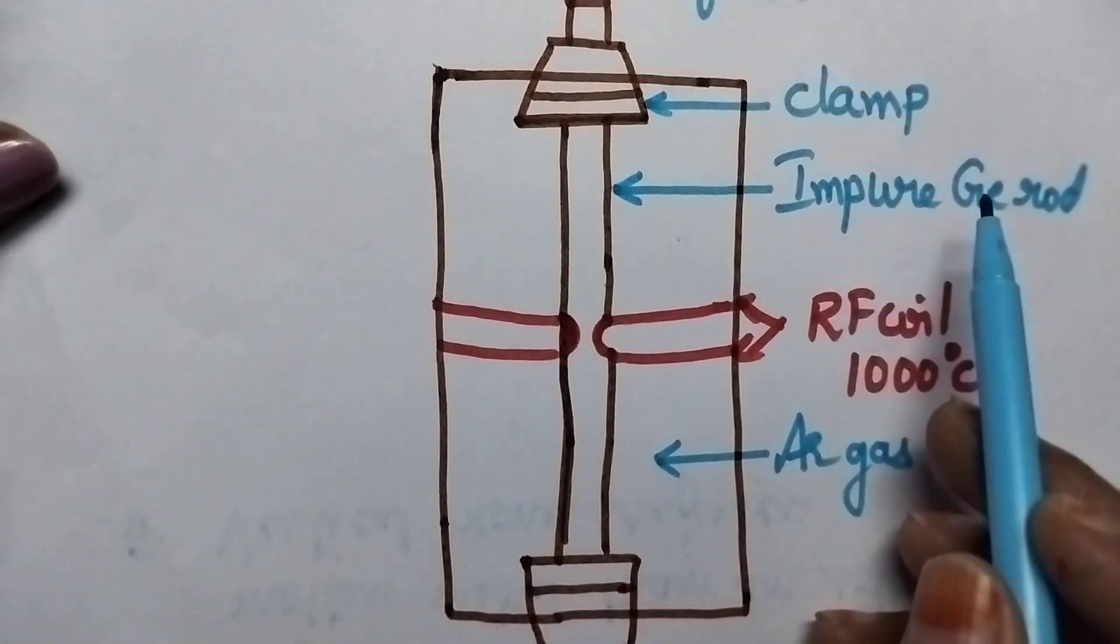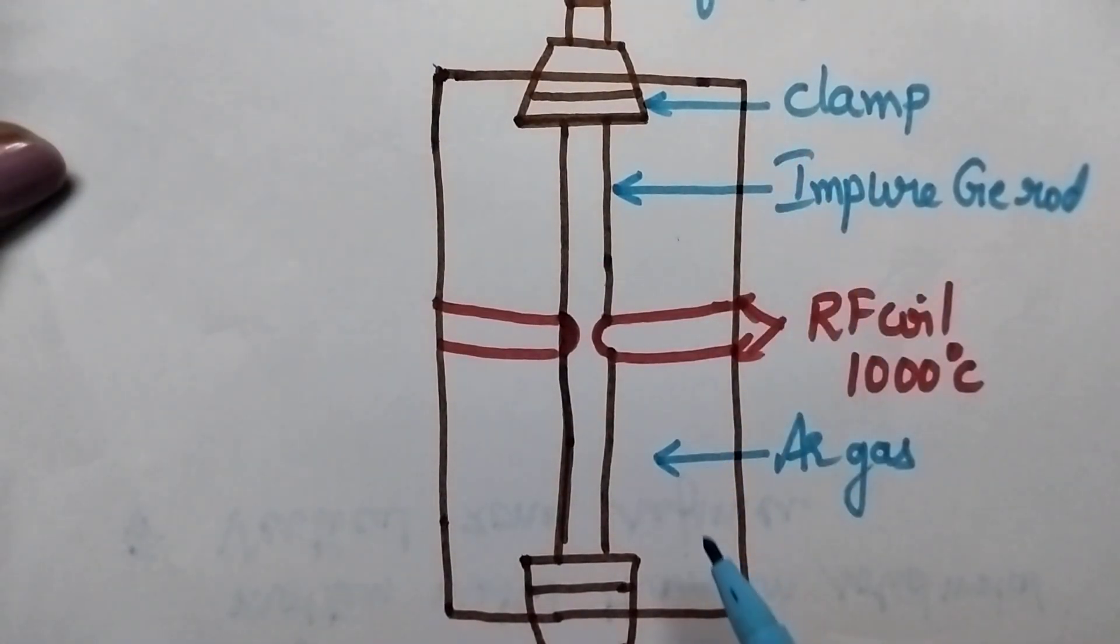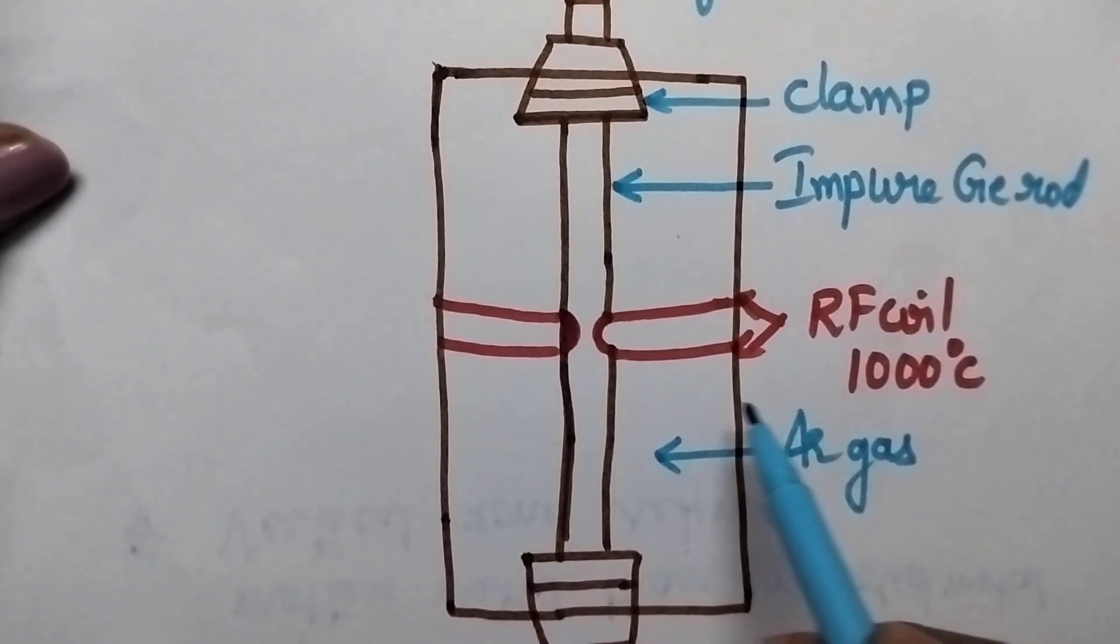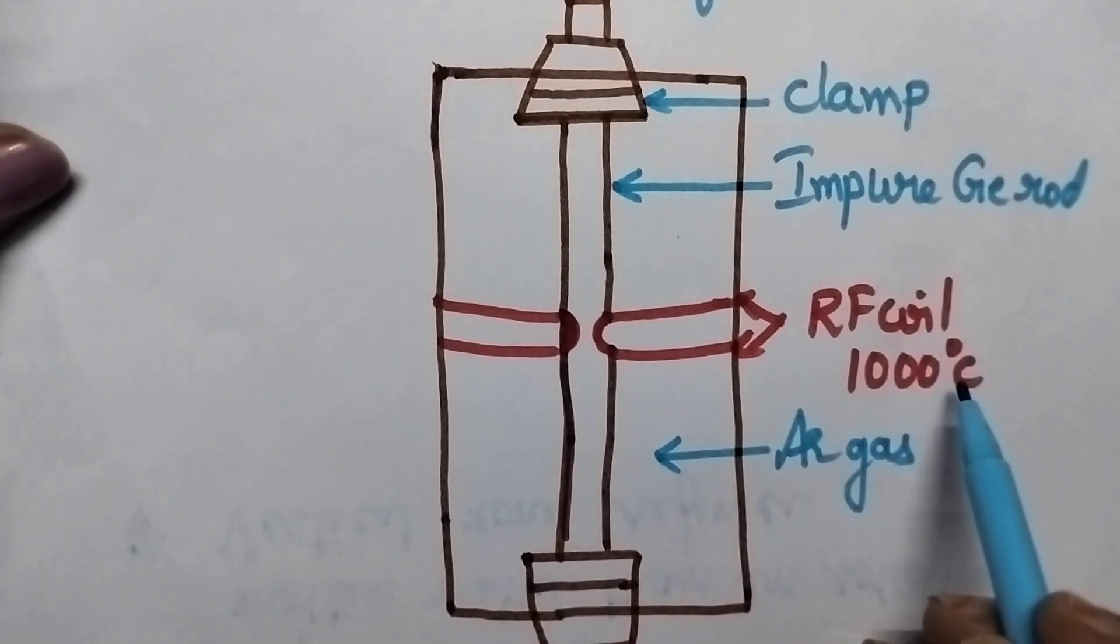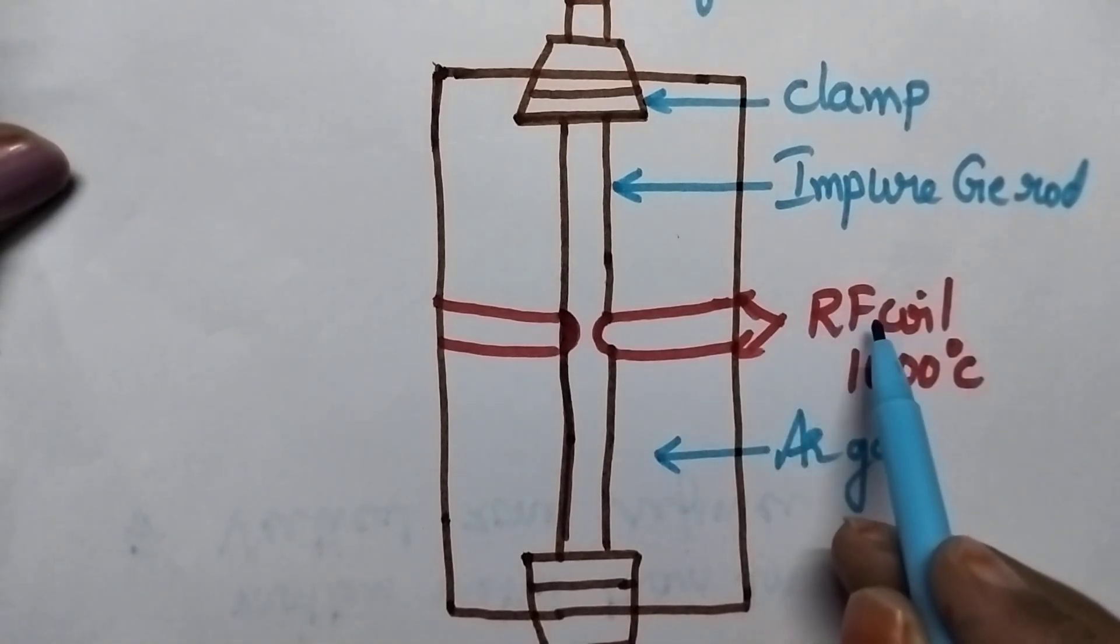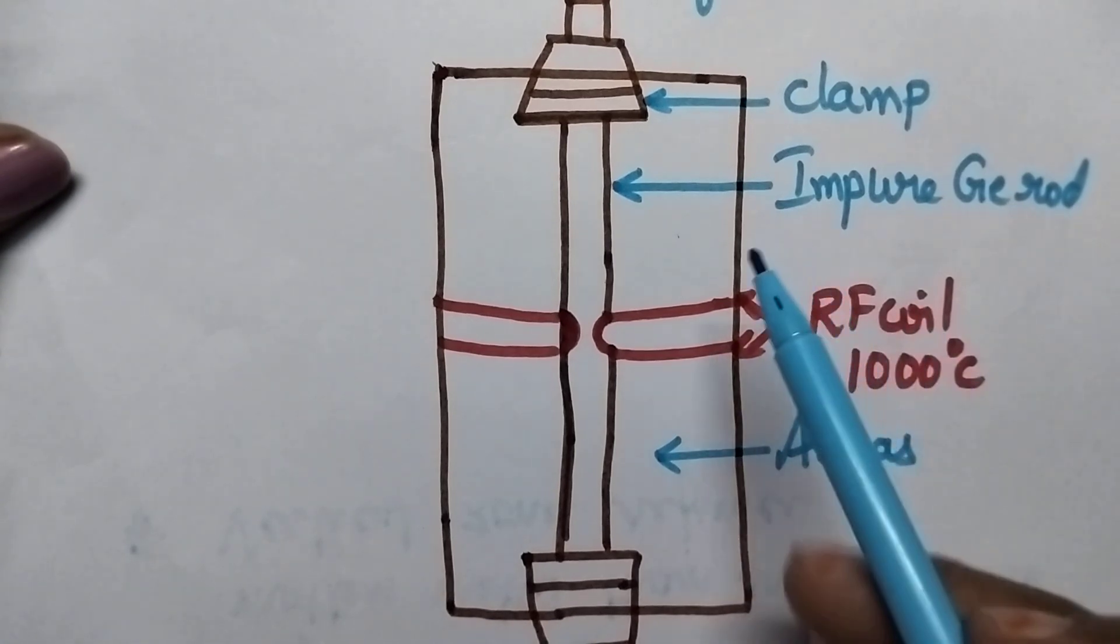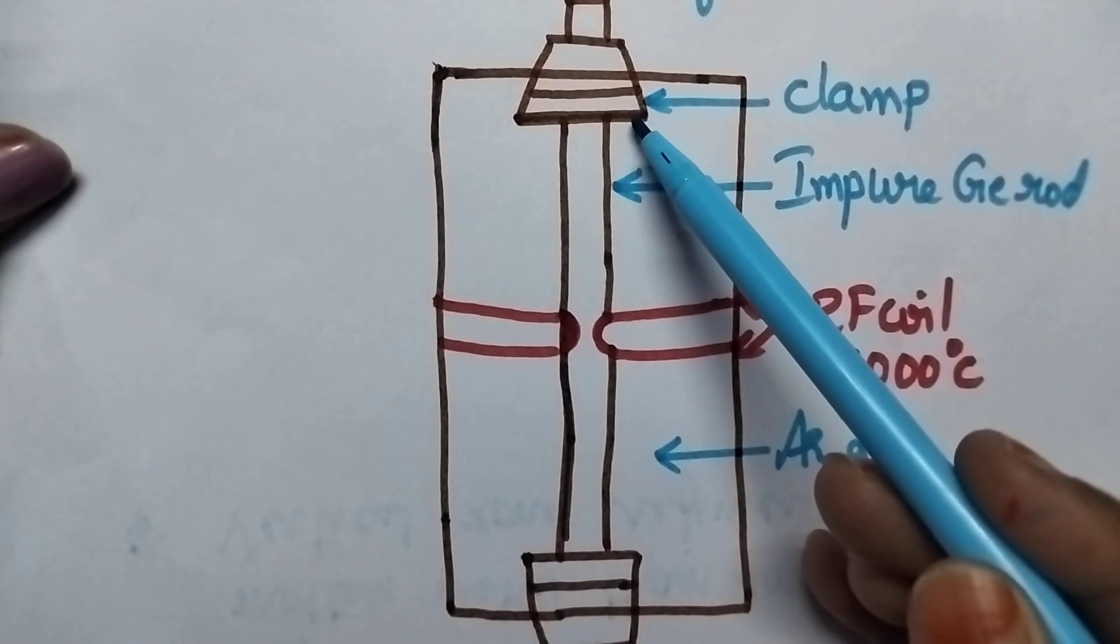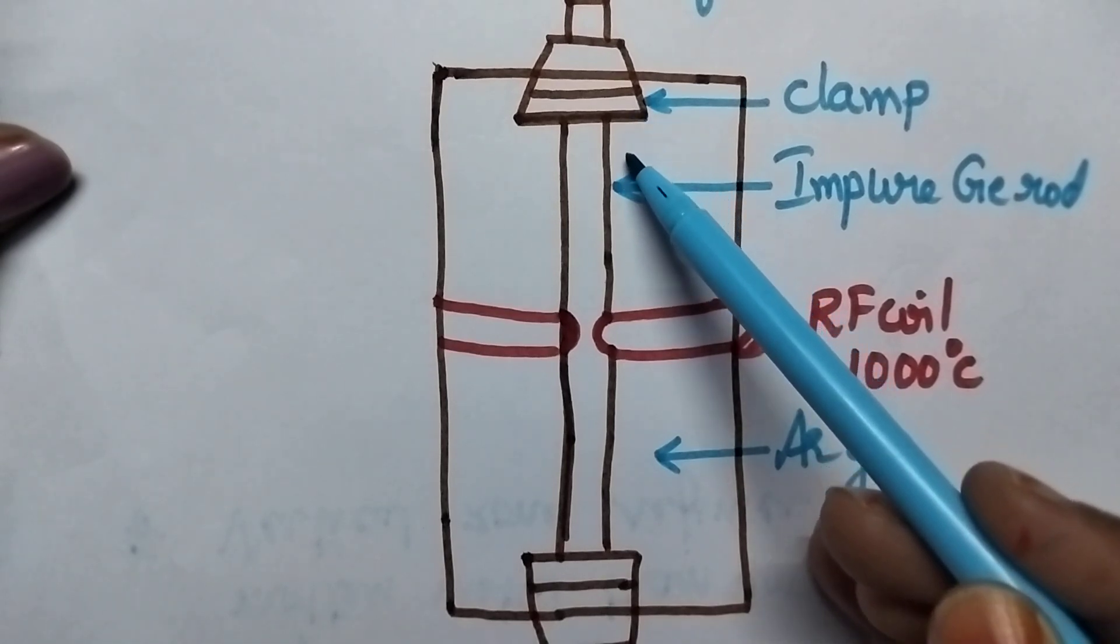In the zone refining process, the impure germanium rod is clamped in the vertical zone refiner. The refiner is filled with inert gas like argon gas in order to maintain reducing atmosphere. High temperature, that is 1000 degrees centigrade, is maintained with the help of the RF coil. The RF coil is moved slowly from the top to the bottom.